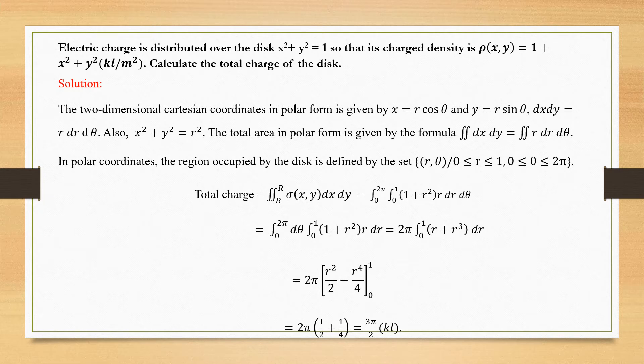The electric charge is distributed over the disc x squared plus y squared equals 1, so that its charge density is rho(x, y) = 1 + x² + y², in k per meter square. Calculate the total charge of the disc. So how are we going to handle this problem under integration?